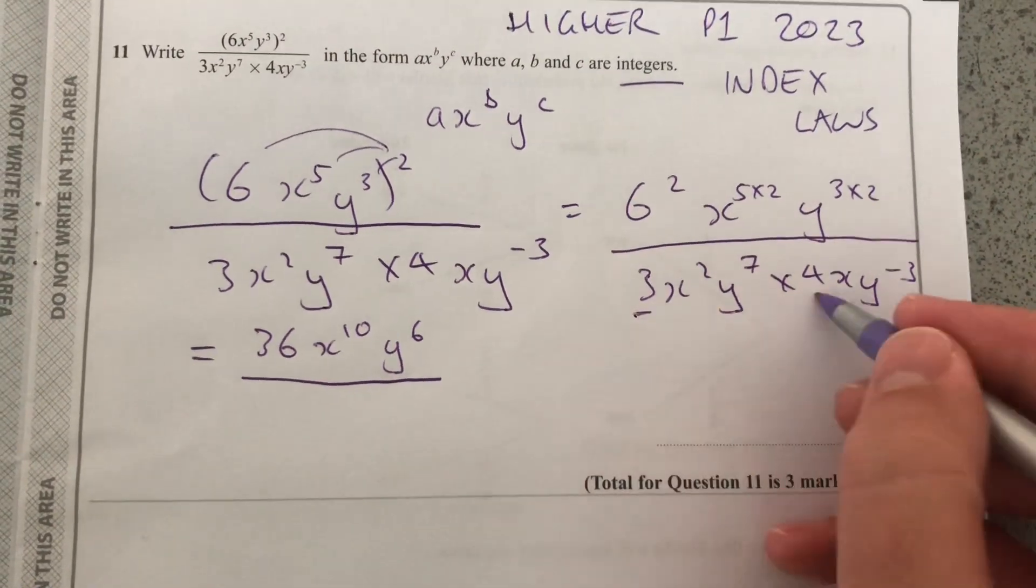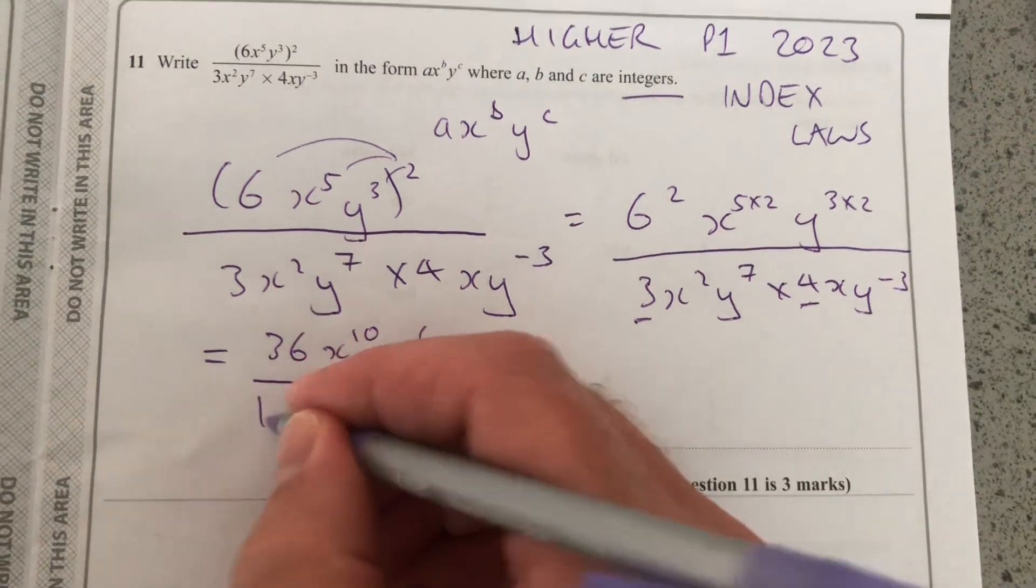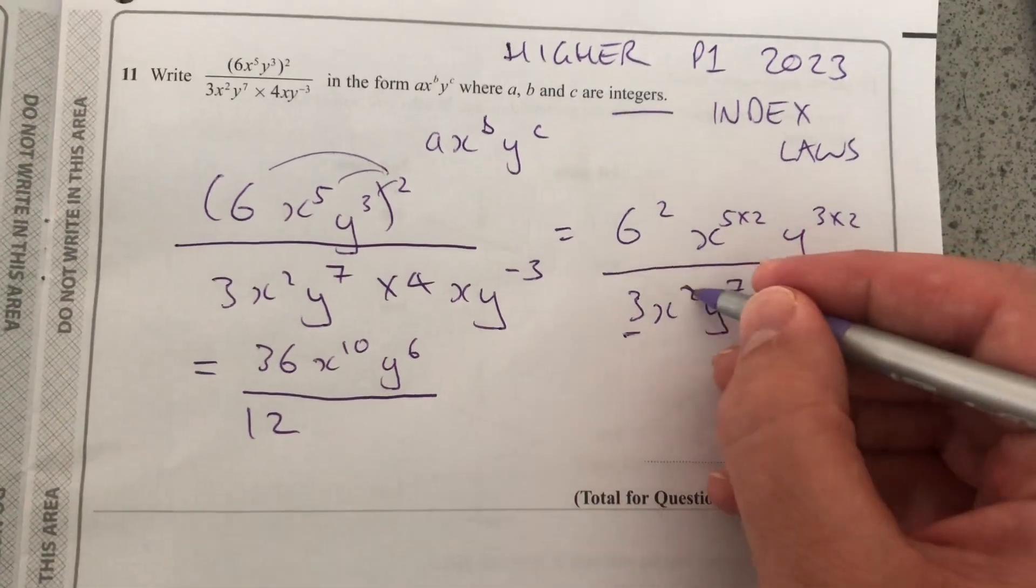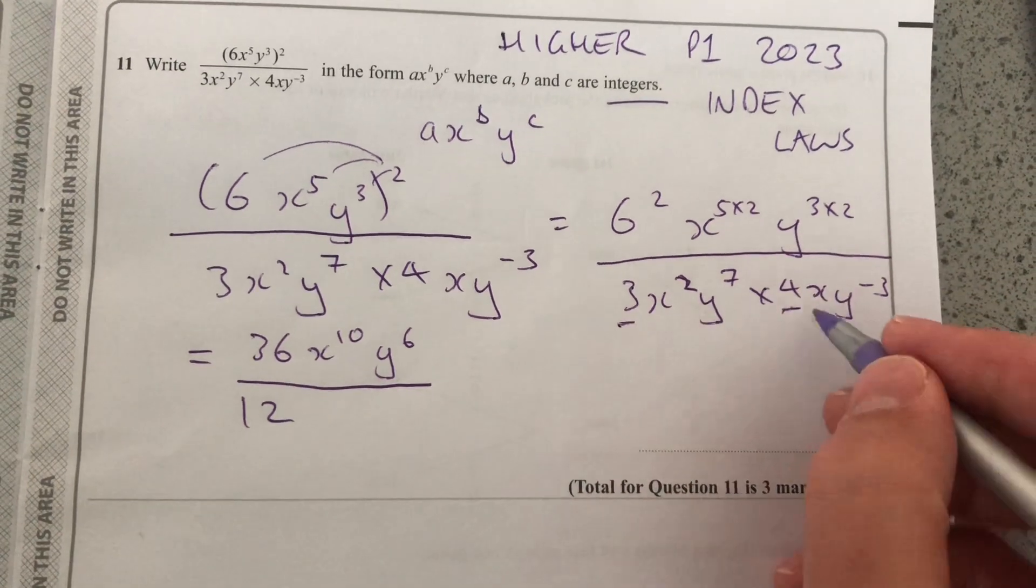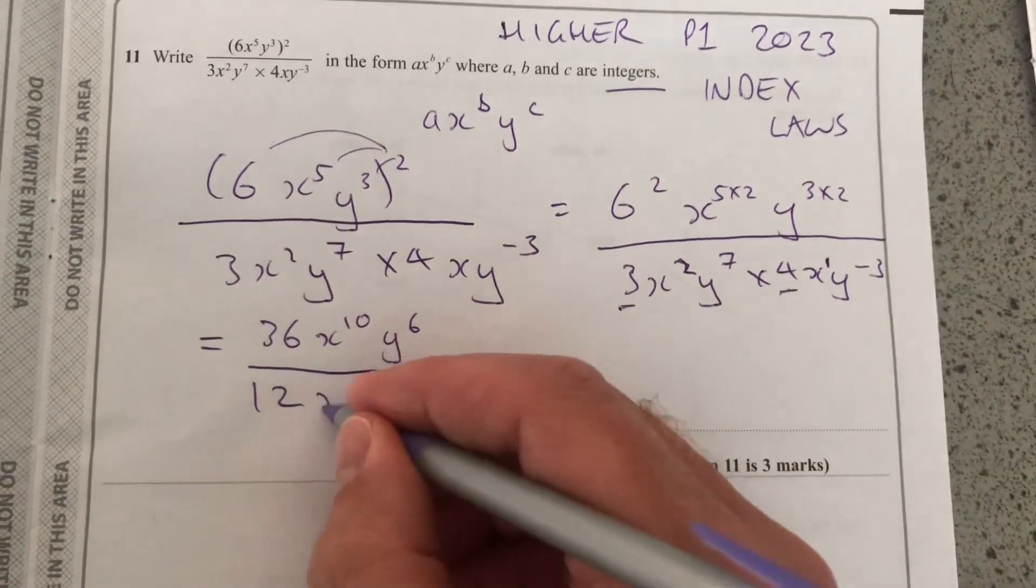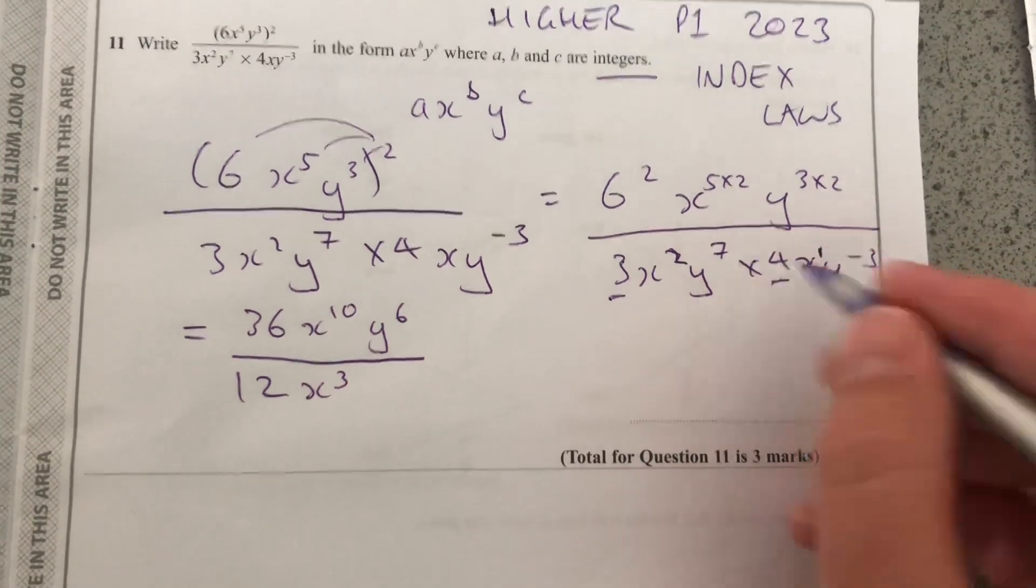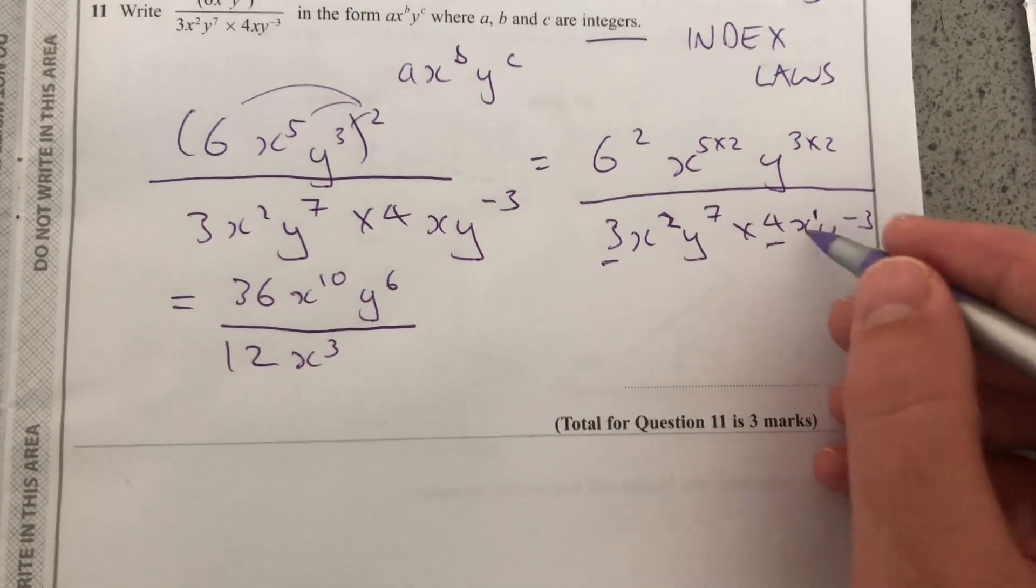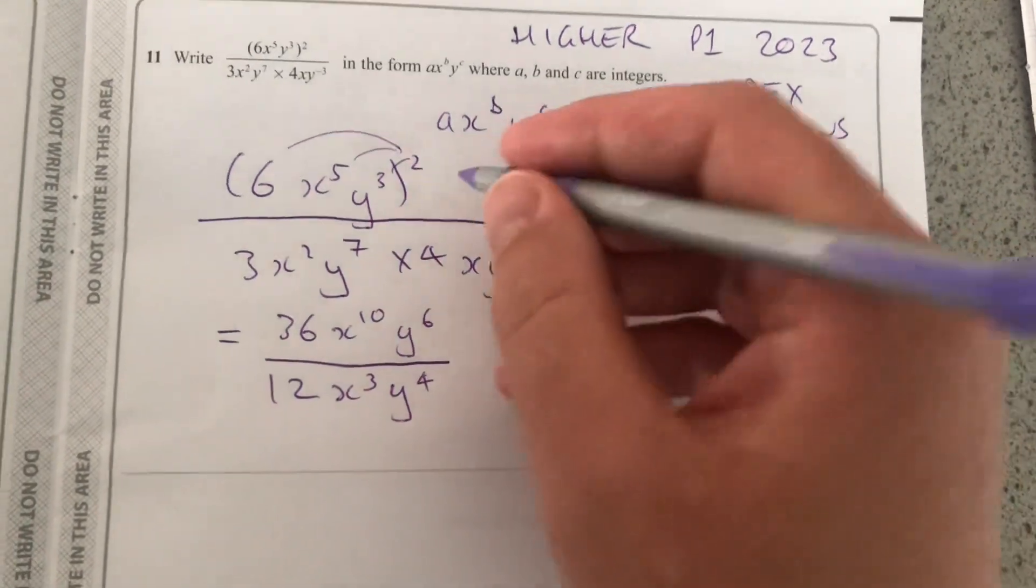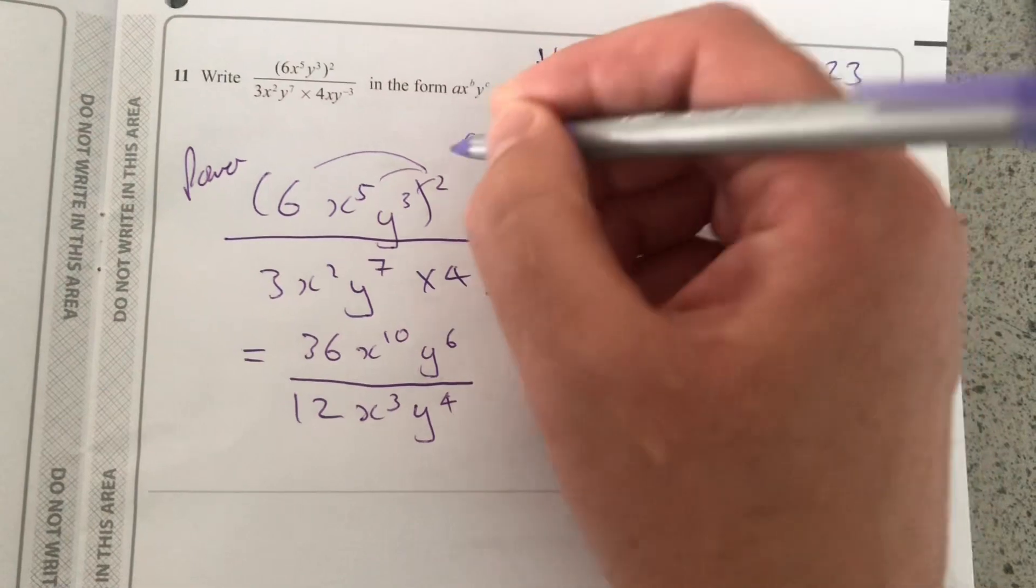In the denominator, 3 times 4 is 12. Now again, index laws, when you multiply bases, you add the powers. X with nothing up there is actually X to the 1. That's X cubed. Y to the 7, you add minus 3. So actually just 7 minus 3, just Y to the 4. So I've used the power law there.